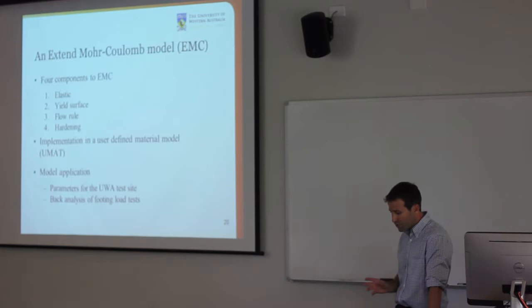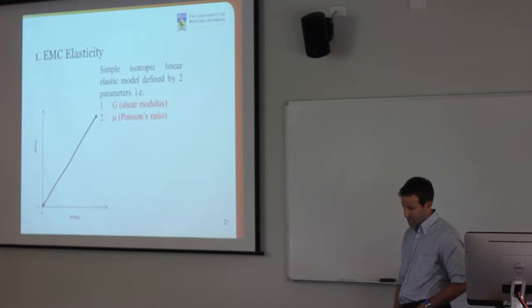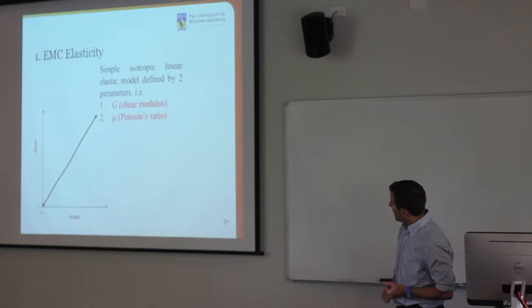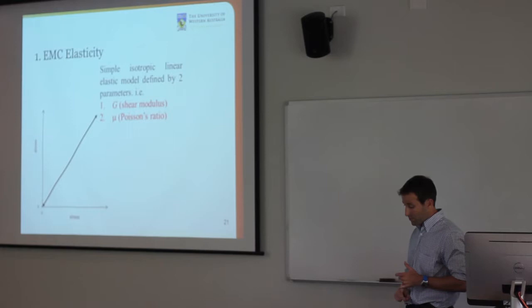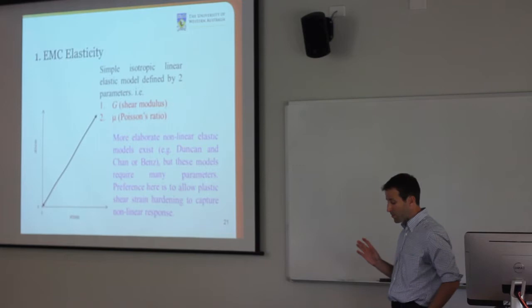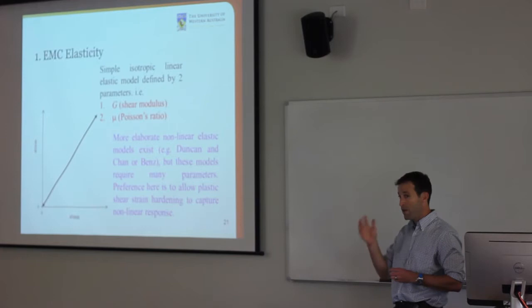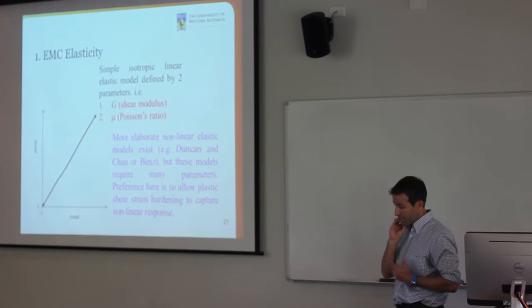In the next few slides I'll go through the four components of the EMC model — the four basic components of any elastoplastic model: the elasticity component, yield surface, flow rule, and hardening rule. Elasticity is very simple in this model — just a linear elastic model with two parameters: shear modulus G and Poisson's ratio. There's no non-linear elastic part. The idea is to use plastic shear strain and plastic hardening to get stiffness degradation, not a non-linear elastic formulation.